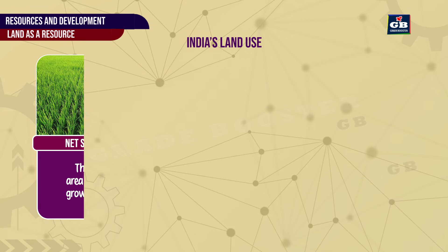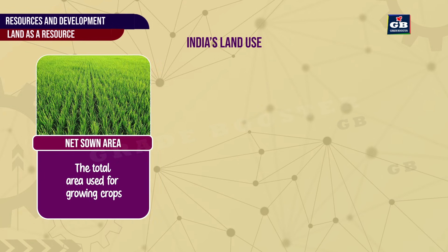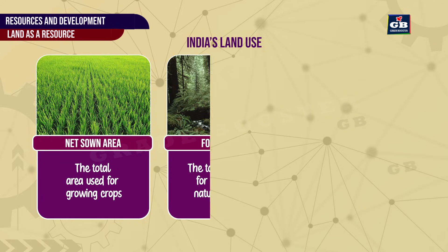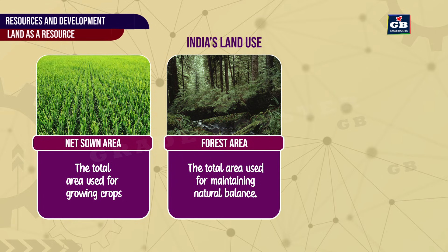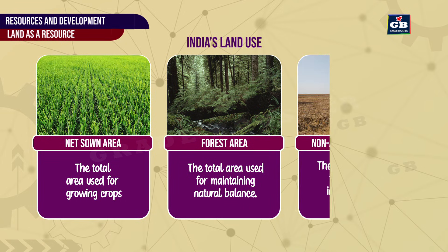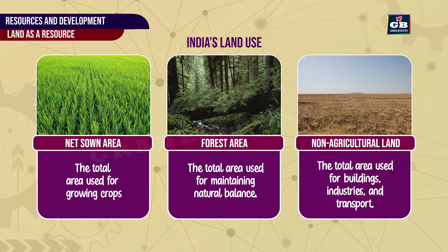Let us see India's land use. India's land is mainly divided into three areas: 1. Net sown area — the total area used for growing crops. 2. Forest area — the total area used for maintaining natural balance. 3. Non-agricultural land — the total area used for buildings, industries, and transport.